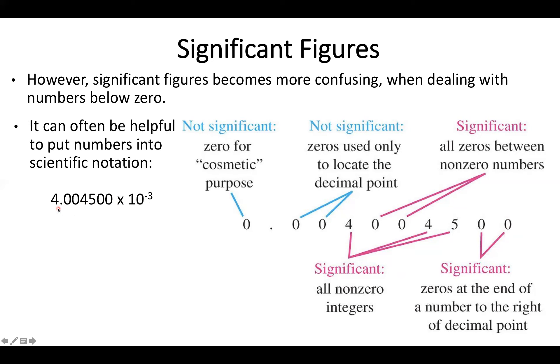So for example, this number has one, two, three, four, five, six, seven significant figures. And then this exponent just tells us how much we have to shift to the right or left. And this exponential method will always really help show you the number of significant figures.